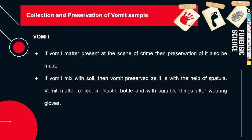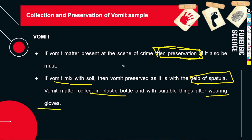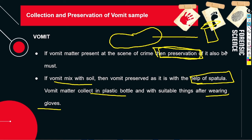Now let's talk about how we collect and preserve the vomit. First of all, when we have identified the vomit — say we found vomit in a case of poisoning — we have to preserve it carefully, otherwise contamination can occur very easily. We will collect it with a spatula and gloves, and preserve it in a plastic bottle. We have to take it with a spatula and keep it in a tube or plastic bottle.